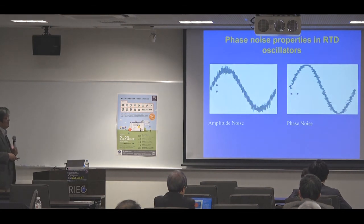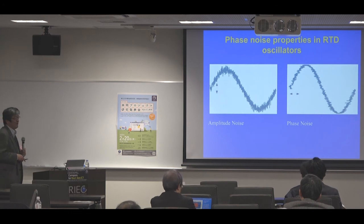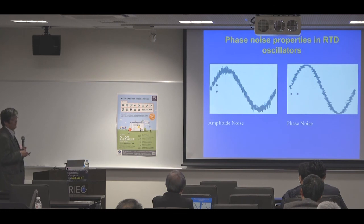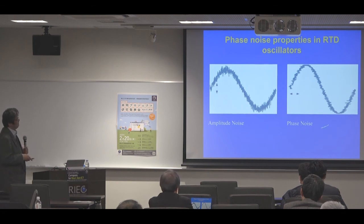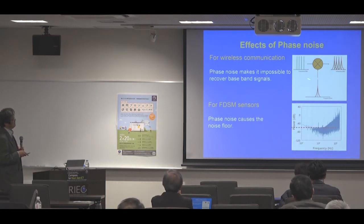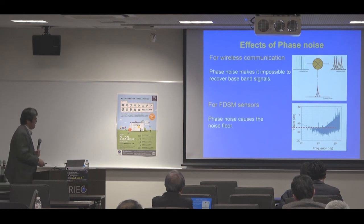Finally, I'd like to emphasize the significance of phase noise in RTD applications. Oscillator noise can be divided into two categories: amplitude noise and phase noise. Amplitude noise is not so difficult to reduce, and the significant problem is phase noise. Phase noise makes it impossible to recover baseband signals in wireless communication systems. Also in our case, for FDSM sensors, the phase noise causes the noise floor, which is a very difficult problem.